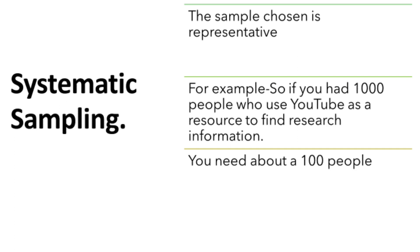So if you had a thousand people who use YouTube as a resource to find research information, you would again first assign each person a number from one to one thousand. If you need about a hundred people for your research, then you need to choose every tenth person to be included in your study.